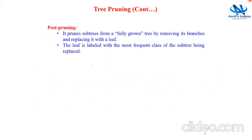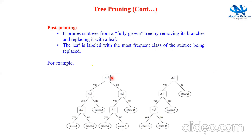This is about pre-pruning. Coming to post-pruning, it prunes subtrees from a fully grown tree by removing its branches and replacing them with a leaf. For example, here is a fully grown tree and this is equivalent to a pruned tree. If you observe, the subtree at node A3 is pruned and replaced with class B, which is the most frequent class of the subtree.